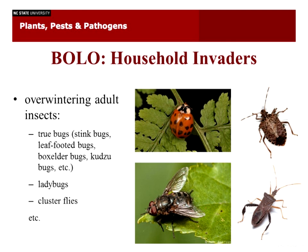Just one BOLO — be on the lookout for household invaders. There are going to be some insects that overwinter as adults and will start to enter homes, thinking it's a natural cave or natural place to live. True bugs like stink bugs — especially the brown marmorated stink bug — leaf-footed bugs, box elder bugs, kudzu bugs, and things like that will come into homes. Lady bugs are also known to swarm this time of year as they look to overwinter, as well as cluster flies — I actually saw one on my house yesterday. These have a very golden sheen on the thorax, which tells you it's a cluster fly. These can be vacuumed up or removed physically; it's not really good to spray chemicals.